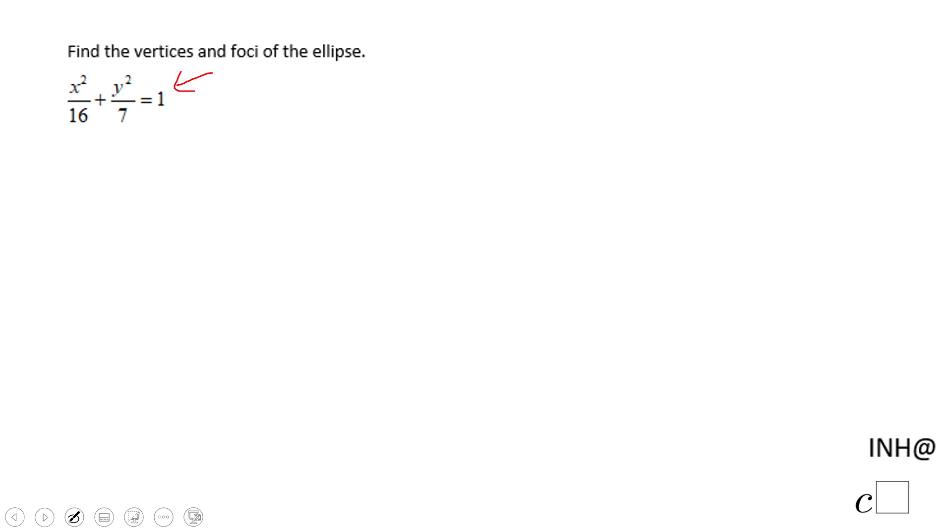But the first thing you need to notice about this ellipse is that the center is (0,0). How do you know that? We just have x squared and y squared, so that should tell you the center is (0,0).